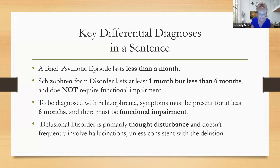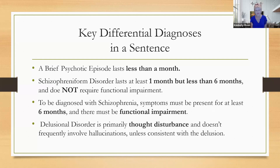Here are the key differential diagnoses in a sentence: A brief psychotic episode lasts less than a month — it's really about duration and time. Schizophreniform disorder lasts at least one month but less than six months and does not require functional impairment. To be diagnosed with schizophrenia, symptoms must be present for at least six months with functional impairment. Delusional disorder is primarily a thought disturbance and doesn't frequently involve hallucinations, though someone with delusional disorder may have a hallucination consistent only with that particular delusion.